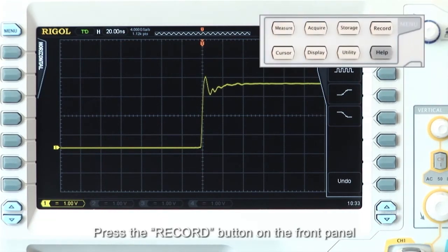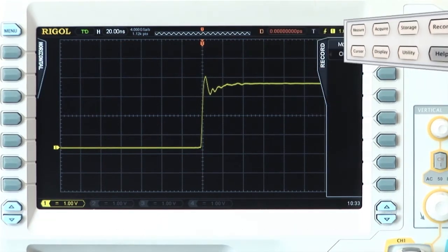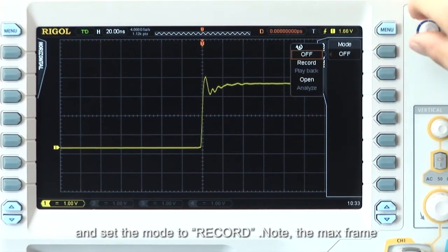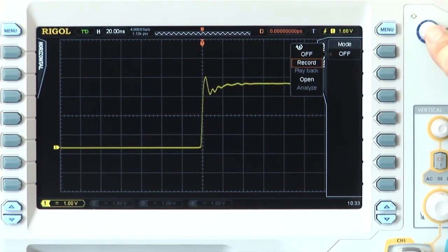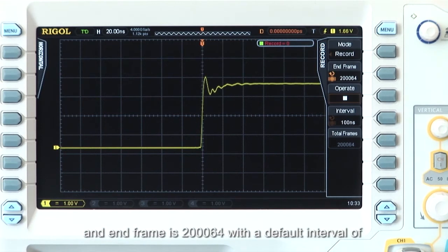Press the record button on the front panel and set the mode to record. Note the max frame and end frame is set to 200,064 with a default interval of 100 ns between frames.